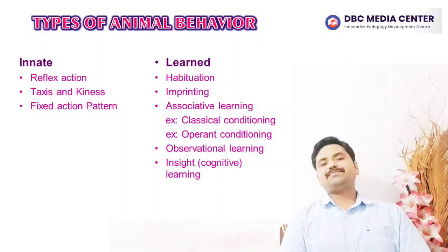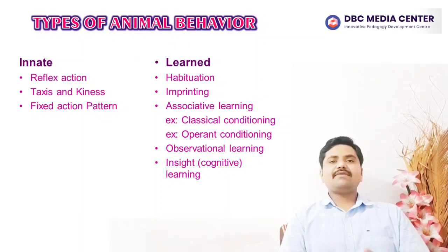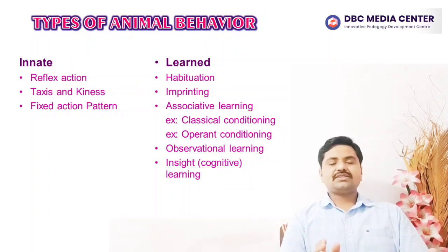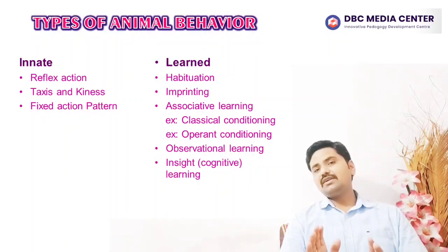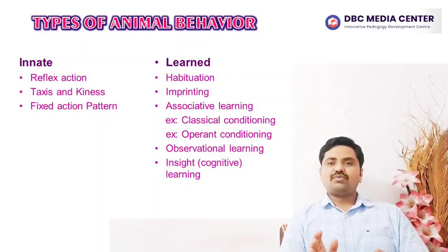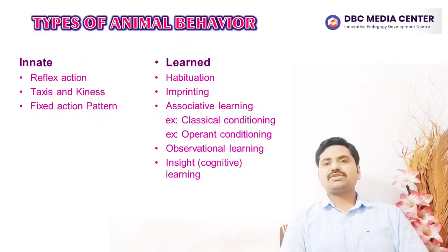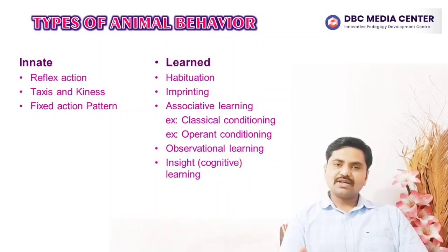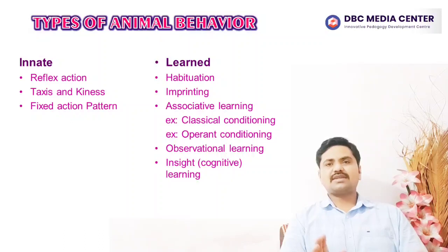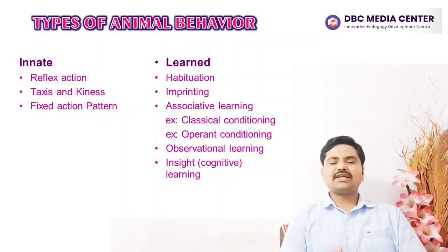Innate behavior includes behaviors that are pre-programmed into an animal, including reflex, taxis, kinases, and the fixed action pattern. In the case of learned behavior, we focus on habituation, imprinting, classical conditioning, operant conditioning, and cognitive learning. These are the types of both innate and learned behavior.